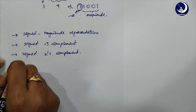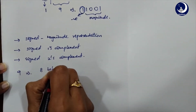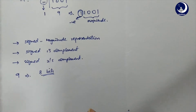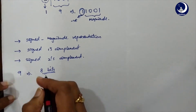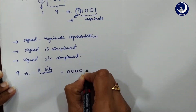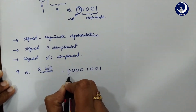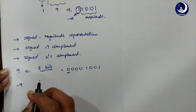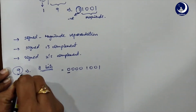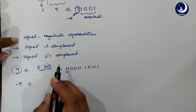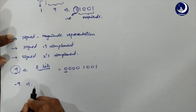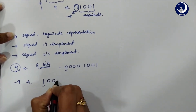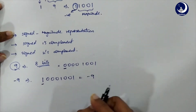Consider the value 9. In questions, they will specify how many bits to use — always remember that the leftmost bit determines the sign of the complete number. Using 8 bits, we represent positive 9 as 0 0 0 0 1 0 0 1, where the leading 0 indicates a positive value. To get minus 9, we have three methods. For signed magnitude, we simply change the leftmost bit to 1, giving us 1 0 0 0 1 0 0 1.